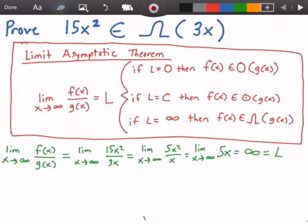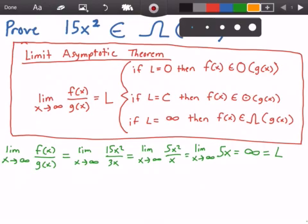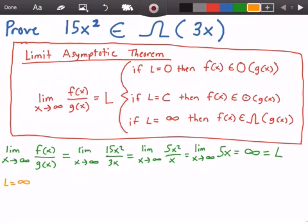Now, which case here do we want to use? Well, since L is equal to infinity, we want to use that third case. So I'm going to change the color to yellow. L is equal to infinity, and that means that our f of x belongs to big omega of g of x.